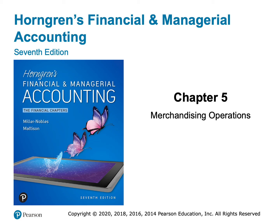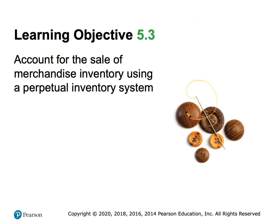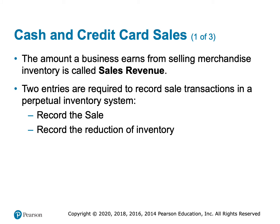In Learning Objective 2, we bought the inventory and recorded it at cost. Now we're ready to sell the inventory using a perpetual inventory system. When selling a good, we call that account sales revenue. Every time we sell something, we have to do two journal entries: the first entry is to record the sale, and the second entry is to record the inventory that we sold — reducing the inventory account and moving that amount into the cost of goods sold expense account.